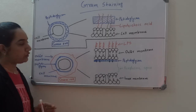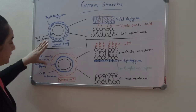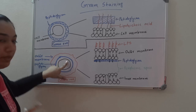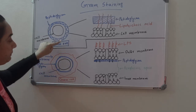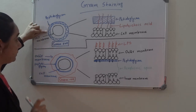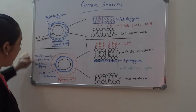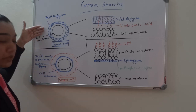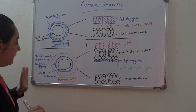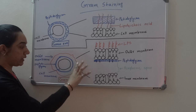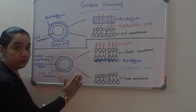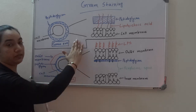Both gram positive and gram negative bacteria have a cell membrane and a peptidoglycan layer — that is the common thing. But the peptidoglycan layer is really thick in gram positive and really thin in gram negative: approximately 80% in gram positive versus only 10% in gram negative. Additionally, gram negative has an extra outer cell membrane which is absent in gram positive.